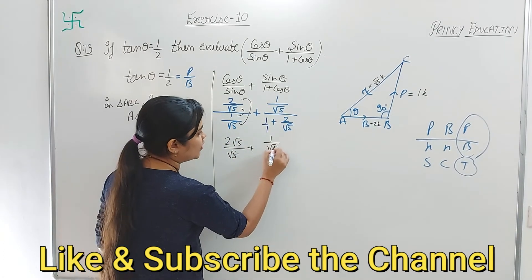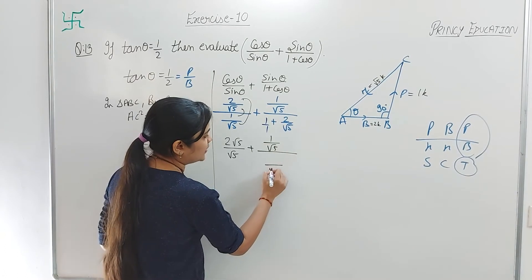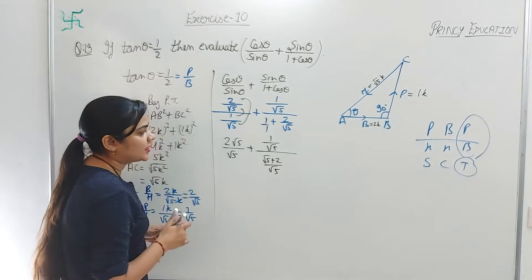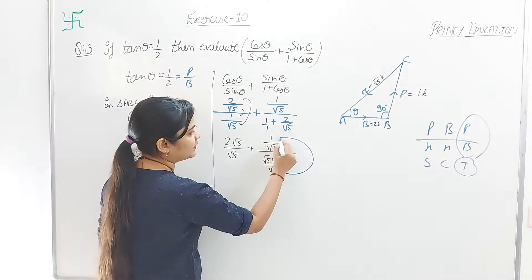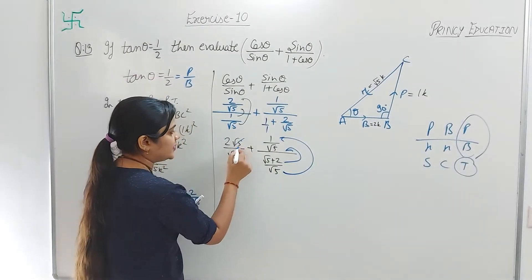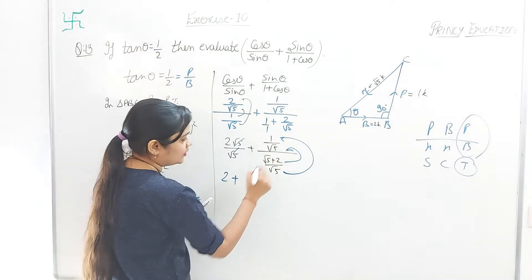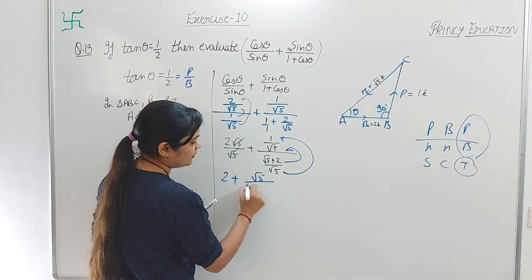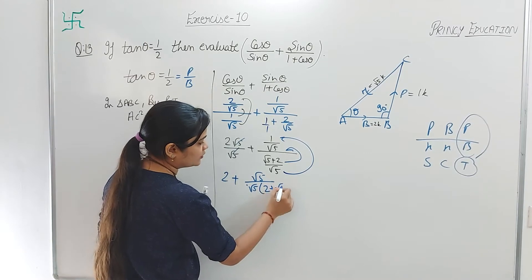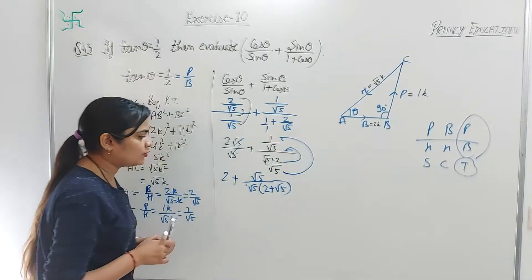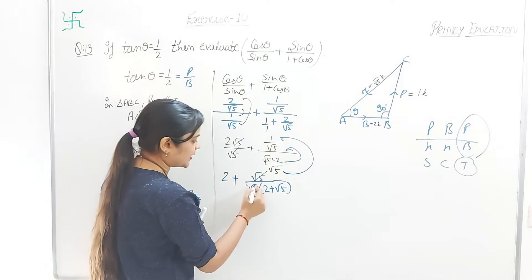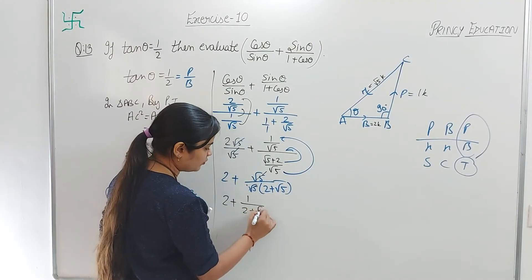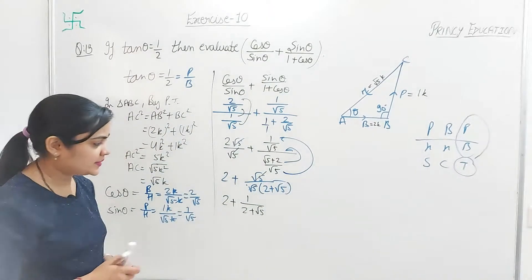We will solve by multiplying. The first term: (2/√5) ÷ (1/√5) = 2. For the second term, take LCM in the denominator — (1 + 2/√5) becomes (√5 + 2)/√5. So the second term becomes (1/√5) × (√5/(√5 + 2)) = 1/(√5 + 2). Adding both: 2 + 1/(√5 + 2), which gives (2(√5 + 2) + 1)/(√5 + 2) = (2√5 + 5)/(√5 + 2).